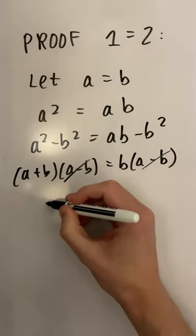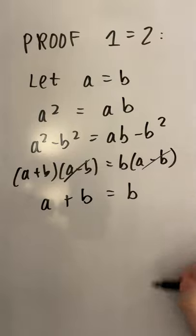Next up we can divide through by A minus B to get A plus B is equal to B.